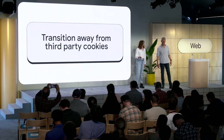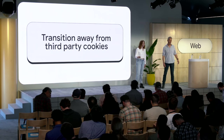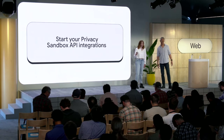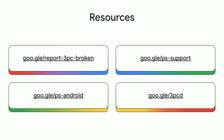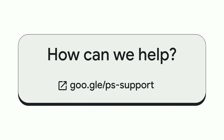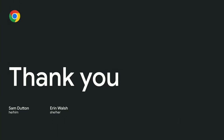To get started: transition your existing sites from using third-party cookies to privacy-preserving alternatives, and start your integrations with the Privacy Sandbox ads API solutions so that you don't need cross-site map identifiers. Here are some URLs to help — you can report breakage and get support, find Android documentation, and reach the landing page for all of our resources. Tell us what you need during this transition — any feedback helps us make third-party cookie deprecation an easier process for everyone. Thank you so much for being here today and watching our session — we'll see you soon.